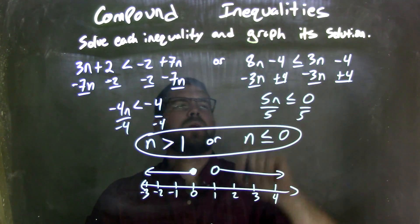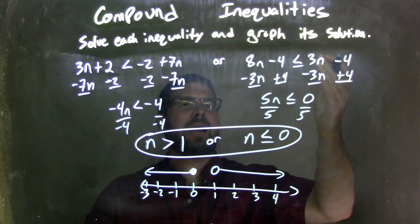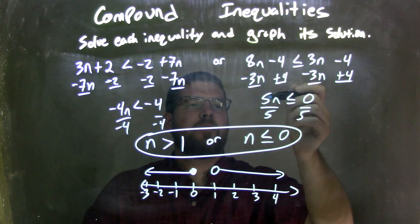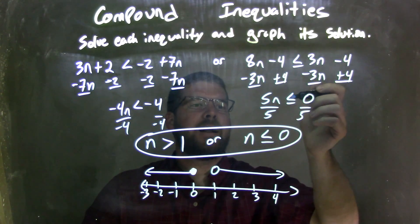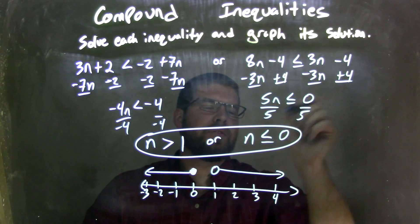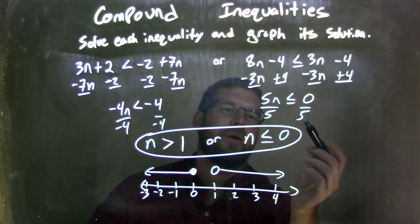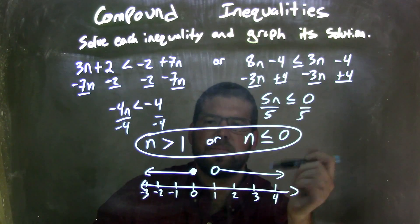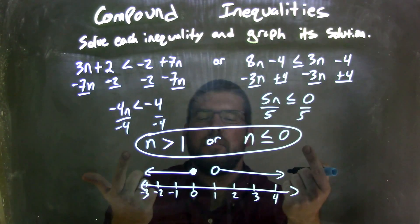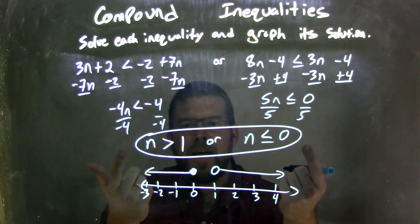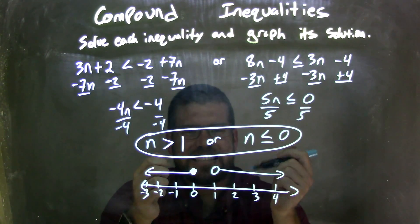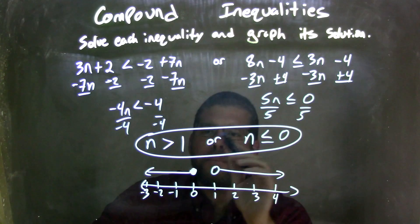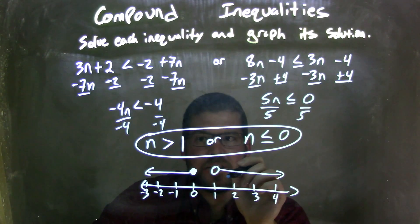On the second one, I brought n to the left and numbers to the right, and got 5n is less than or equal to 0. I then divided by 5 and got n is less than or equal to 0. Both inequalities were solved for n, but they're separated by an or, so I graph each individually.